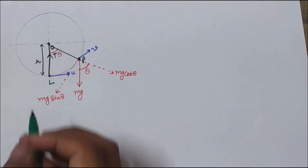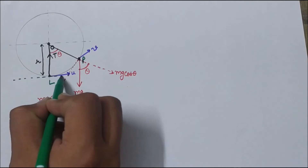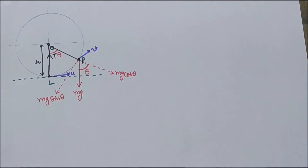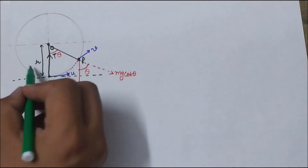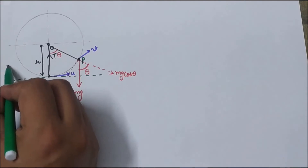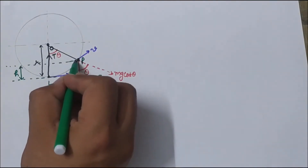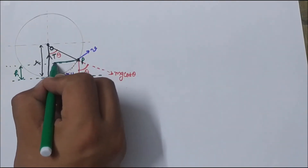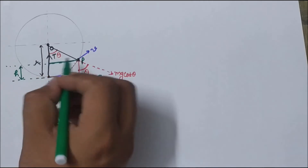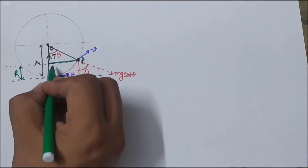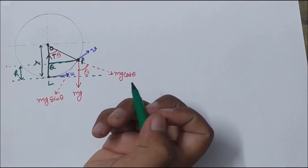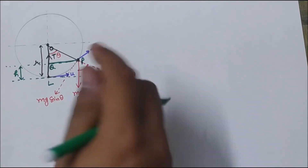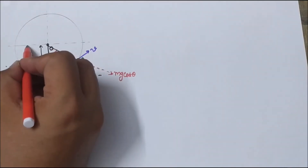Now we draw a reference line from where the motion has started. From this reference line the particle is at height h. If we draw a perpendicular from point P onto the length of rope and name it point Q, then the length OQ will be small r minus h.